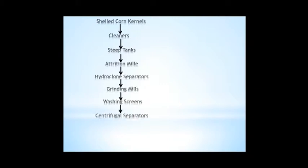Okay, let's see from this graph. The corn will firstly go into the shelled corn kernels and then cleaners, steep tanks, attrition miller, hydrocyclone separators, grinding mirrors, washing screens, centrifugal separators, starch washing filters. And finally, okay, we got the starch slurry.